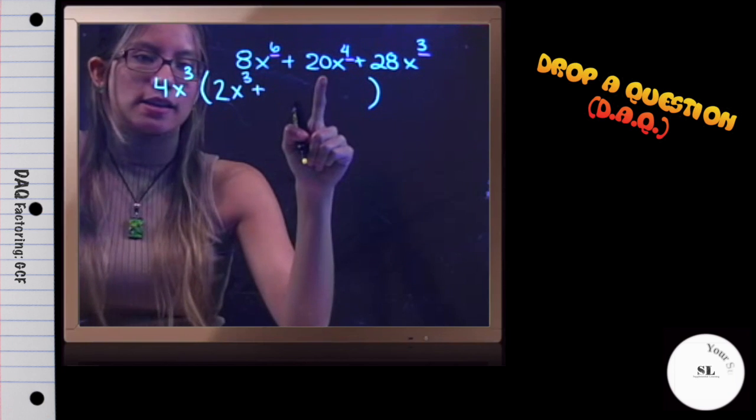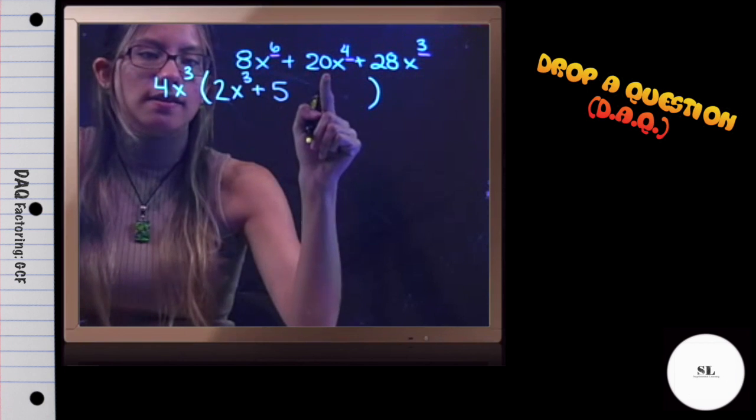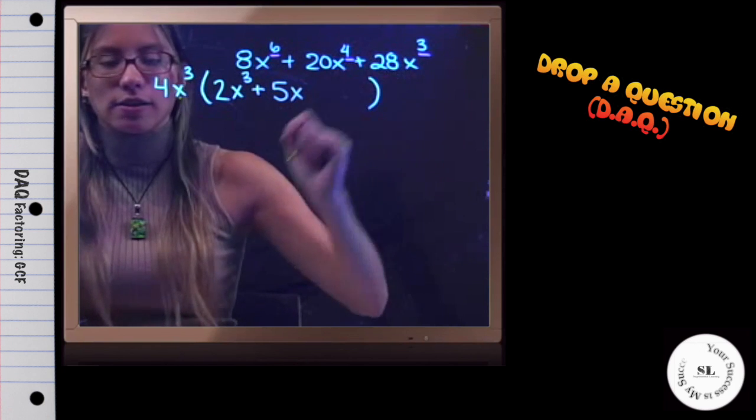Moving on, now we have 20x^4. So 4 times 5 gives us 20, and x^3 times x brings us back to x^4.